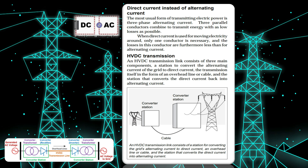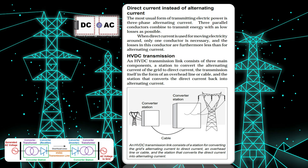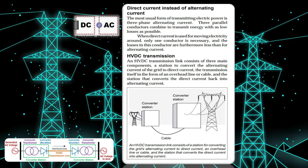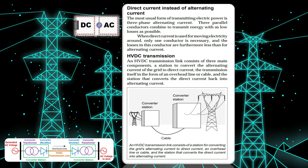To date, electric energy has been transmitted from the power plant to the consumer almost exclusively through high-voltage lines carrying alternating current at a frequency of 50 or 60 Hz.